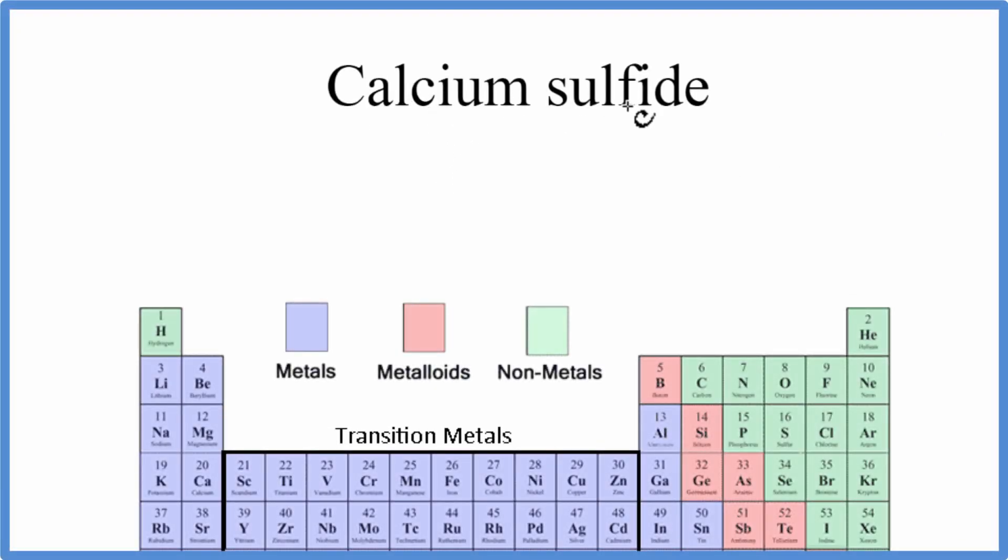To write the formula for calcium sulfide, we go to the periodic table. Calcium, that's C-A, it's a metal. We look up sulfur for the sulfide, that's an S. Sulfur, that's a non-metal.